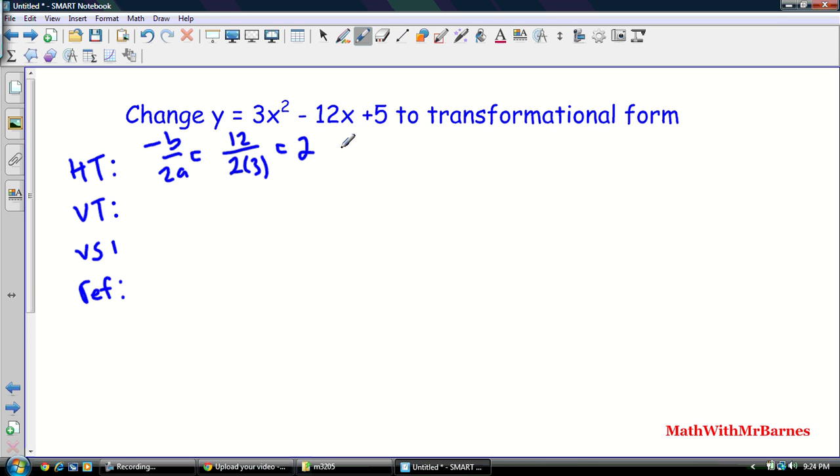My VT is whatever I get when I stick this 2 back in here. So y is equal to 3(2 squared), minus 12 times 2, plus 5, so I'm left with, it's going to be 12, 2 squared, 4 times 3 is 12, minus 24, plus 5, so I'm left with negative 12, plus 5, or negative 7, so my VT is negative 7.